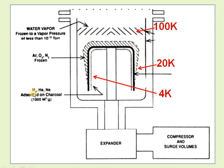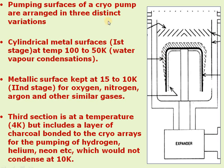The remaining molecules — helium, neon, and residual hydrogen — are removed by cryosorption. The interior walls are coated with activated charcoal or high-quality zeolites. When the temperature comes to 4 Kelvin, these are also removed. This way, the entire chamber connected to the pump is completely evacuated.